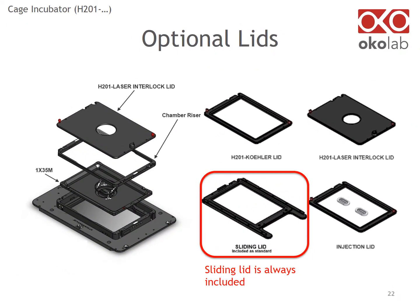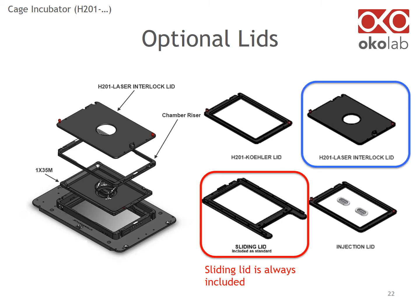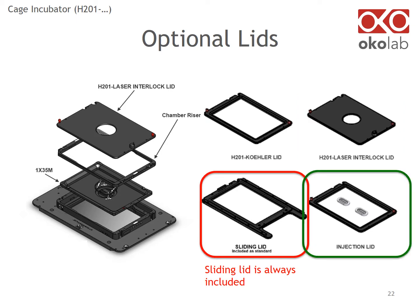This slide shows optional lids available for the most common chambers. The sliding lid is always included. The cooler lid allows you to focus the condenser in case your condenser has a short working distance. The laser inner lock lid adds safety when using laser applications, and the injection lid is for the insertion of needles or capillaries. Note that the laser inner lock lid and the injection lid are compatible only with an insert for a single 35mm dish.